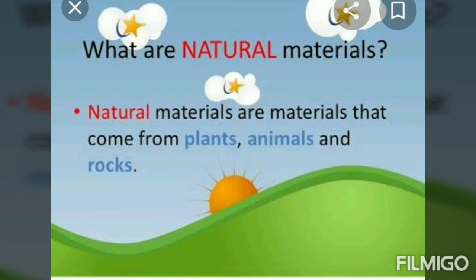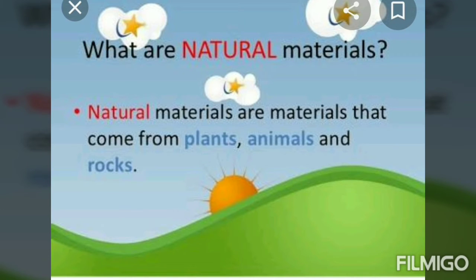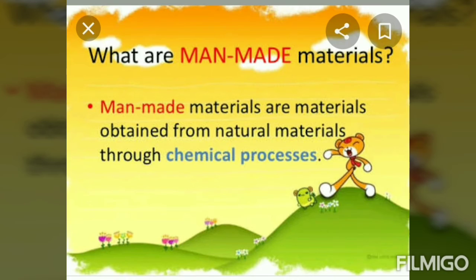What are natural materials? Dear students, natural materials are materials that come from plants, animals and rocks. These are materials that are found around us. We may have to dig them out of the ground, grow them, or take them from living things — like wood, cotton, wool, metals, oil, etc.